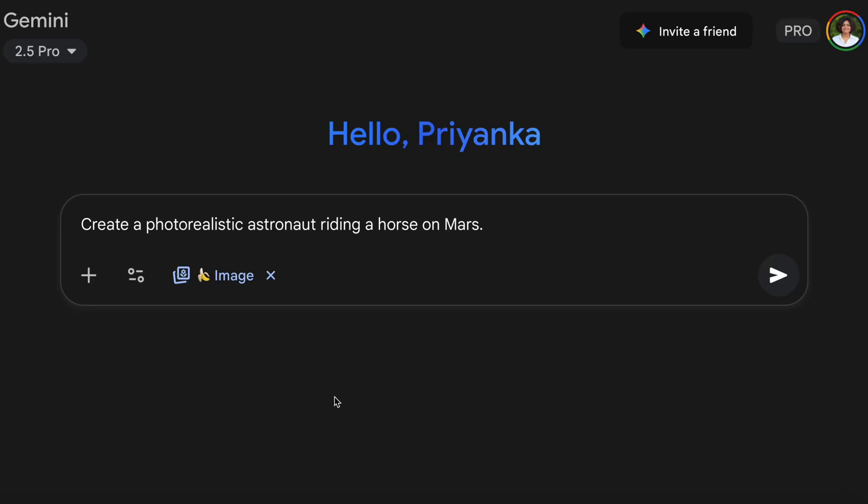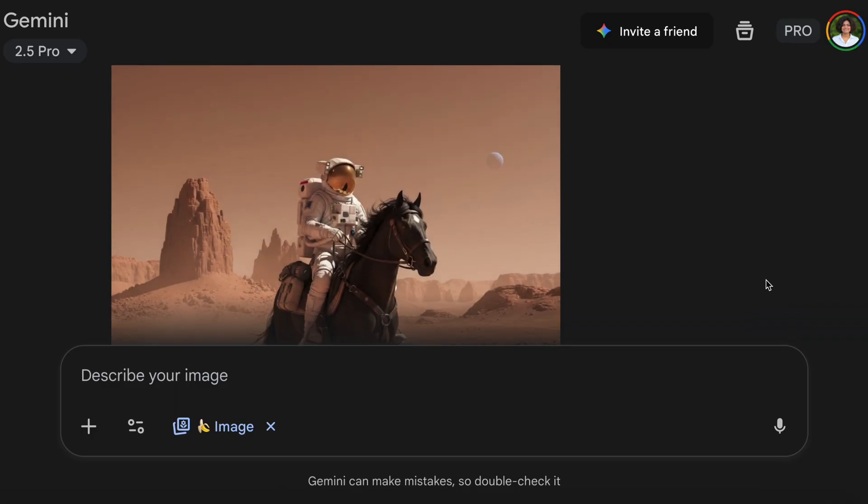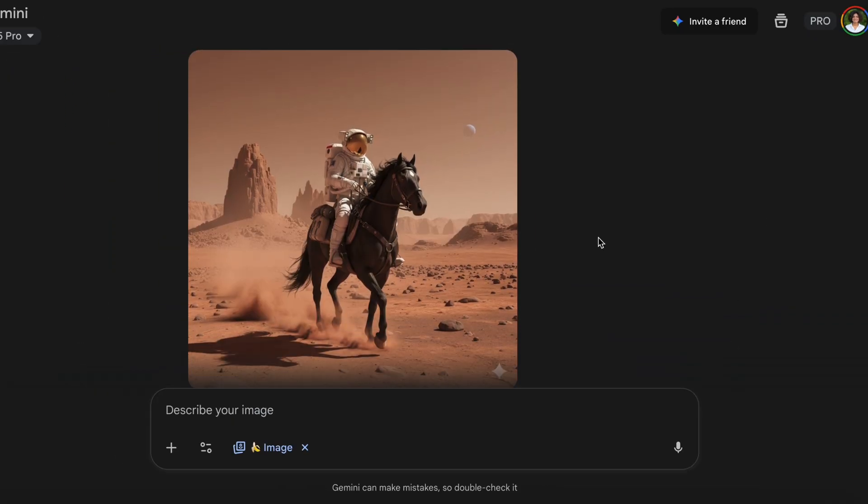Have you ever wondered how AI models like DALI, MidJourney, Nano Banana, and Sora can take a simple text prompt like 'a photorealistic astronaut riding a horse on Mars' and turn that into a stunning high quality image or even a video?